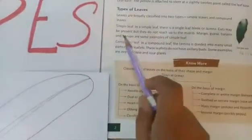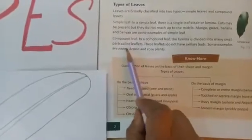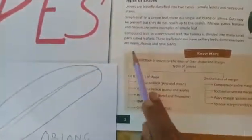Students, we were discussing types of leaves. We have discussed the two types of leaves, simple and compound. Broadly, the leaves are classified into simple and compound.